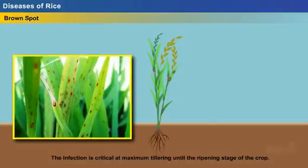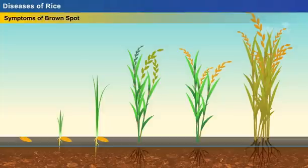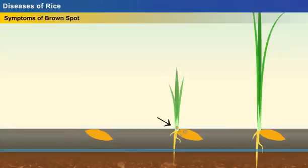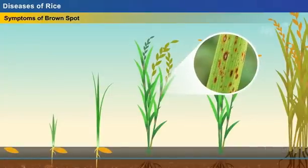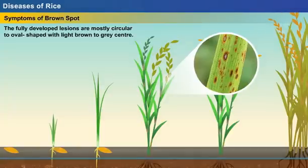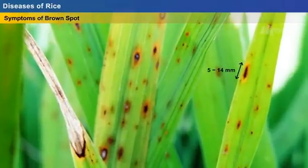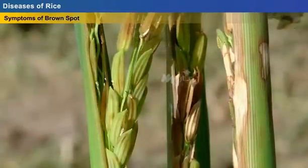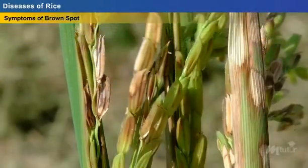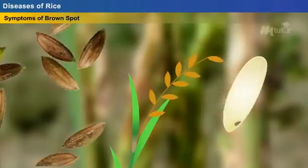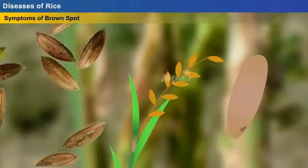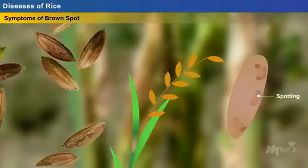The incidence of disease is more in places with temperature ranging between 16 and 36 degrees Celsius and with a relative humidity of 86 to 100 percent. The infection is critical at maximum tillering until the ripening stage of the crop. Symptoms of brown spot: at the seedling stage, circular yellow or brown lesions appear on the coleoptile. At the tillering stage, initially small circular brown to purple-brown lesions appear on the leaves. The fully developed lesions are mostly circular to oval shaped with a light brown to grey centre surrounded by a reddish brown margin. In some cases, the lesions are 5 to 14 mm long, causing the leaves to wilt. Dark brown to black oval spots are visible on infected florets and panicles, decreasing grain quality due to incomplete grain filling.